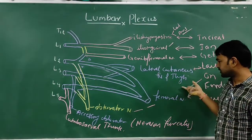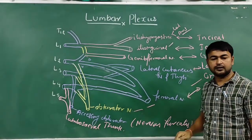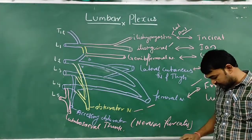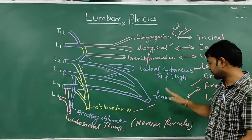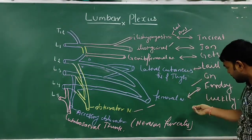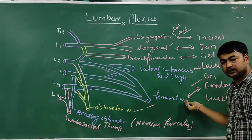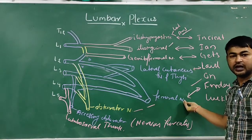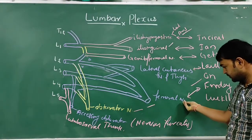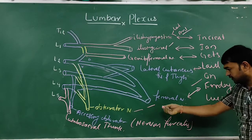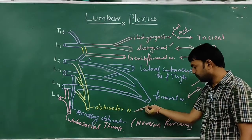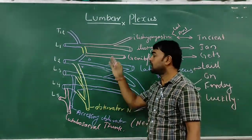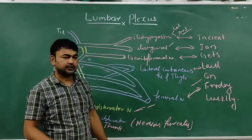The femoral branch supplies the upper anterior part of the thigh. The genital branch supplies the scrotum in male, passing from deep to superficial, and the mons pubis in female. The lateral cutaneous nerve of the thigh supplies the lateral side of the thigh, lateral to the sartorius region. The femoral nerve supplies the muscles of the front of the thigh, and the obturator nerve supplies the muscles of the medial compartment of the thigh.